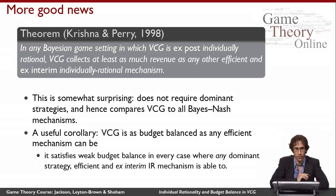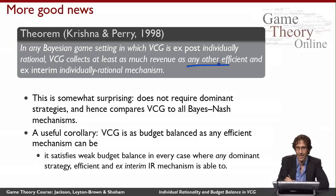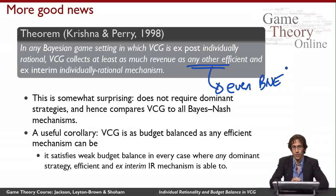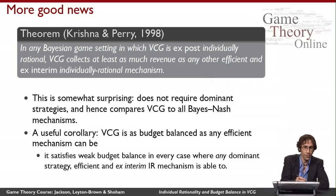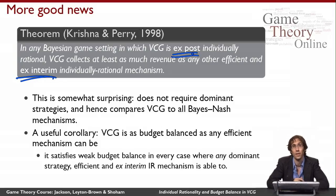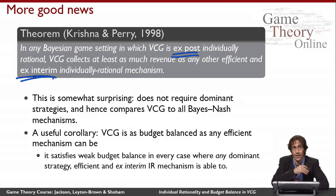VCG collects at least as much revenue as any other efficient mechanism, even mechanisms that only use Bayes-Nash equilibrium rather than dominant strategies — so the competing mechanism is drawn from a much bigger pool. And we only require the competitor mechanism to be ex interim individually rational, whereas VCG must be ex post individually rational. Ex interim individual rationality is a weaker requirement, meaning a broader set of mechanisms satisfy it, making our comparison statement stronger.